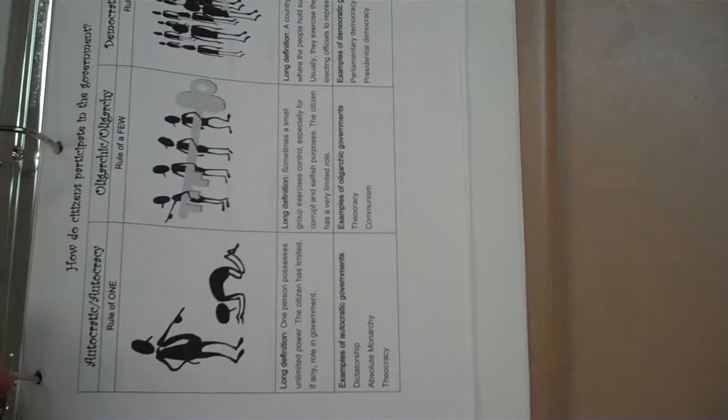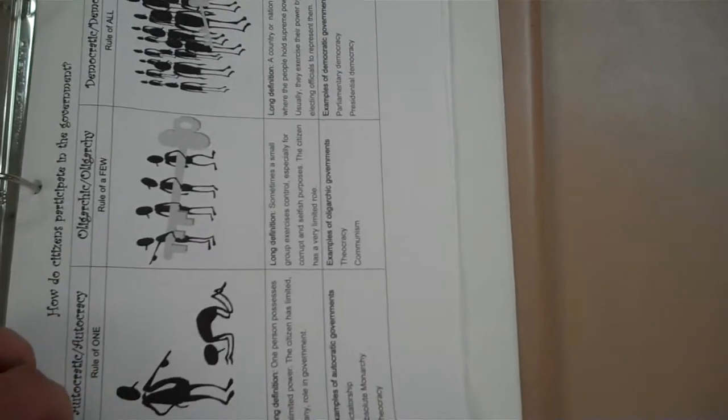Next you have your government distribution of power, talking about unitary, confederation, and federal. Next you have your autocratic, oligarchic, and democratic page talking about the citizen participation and government.